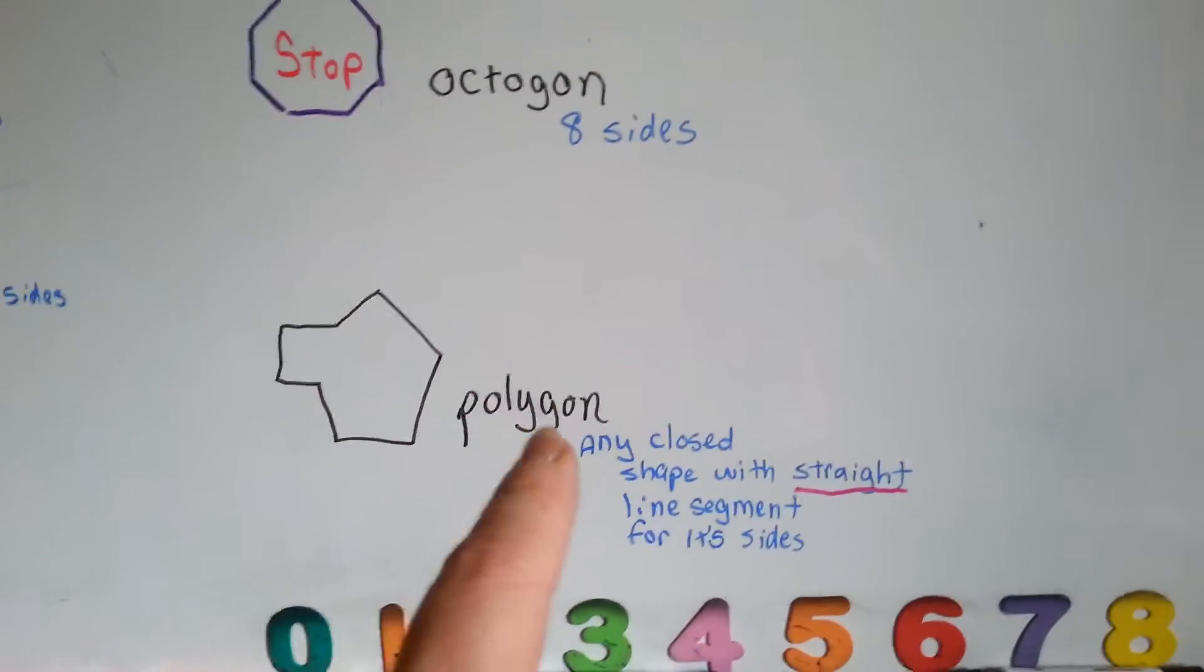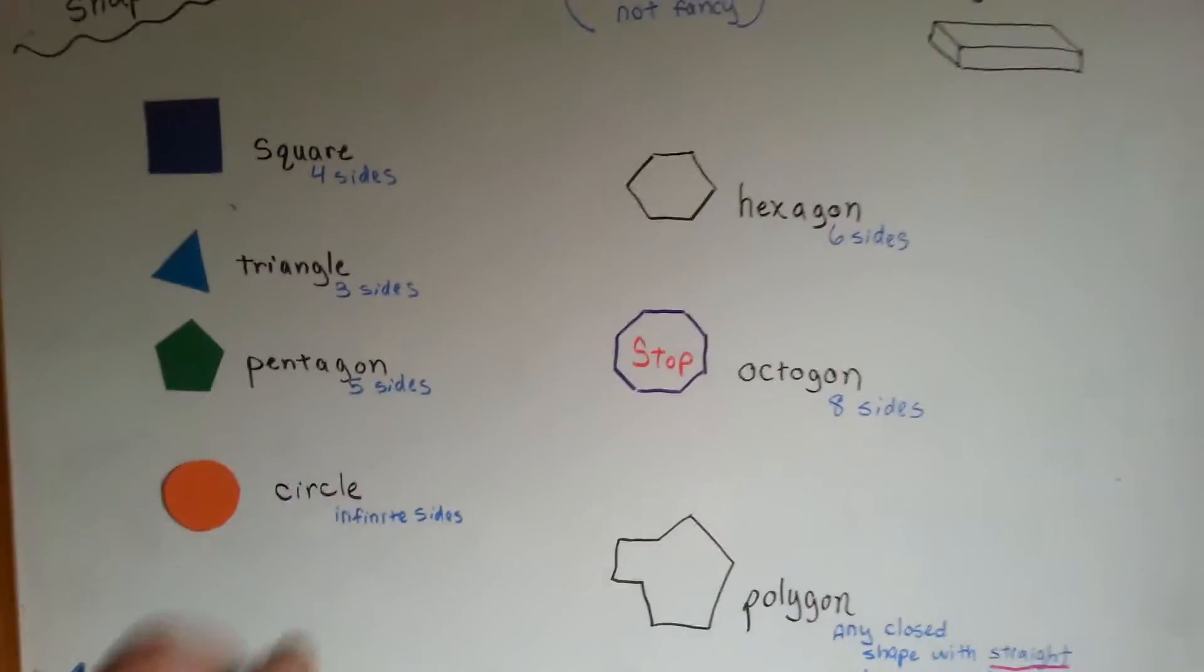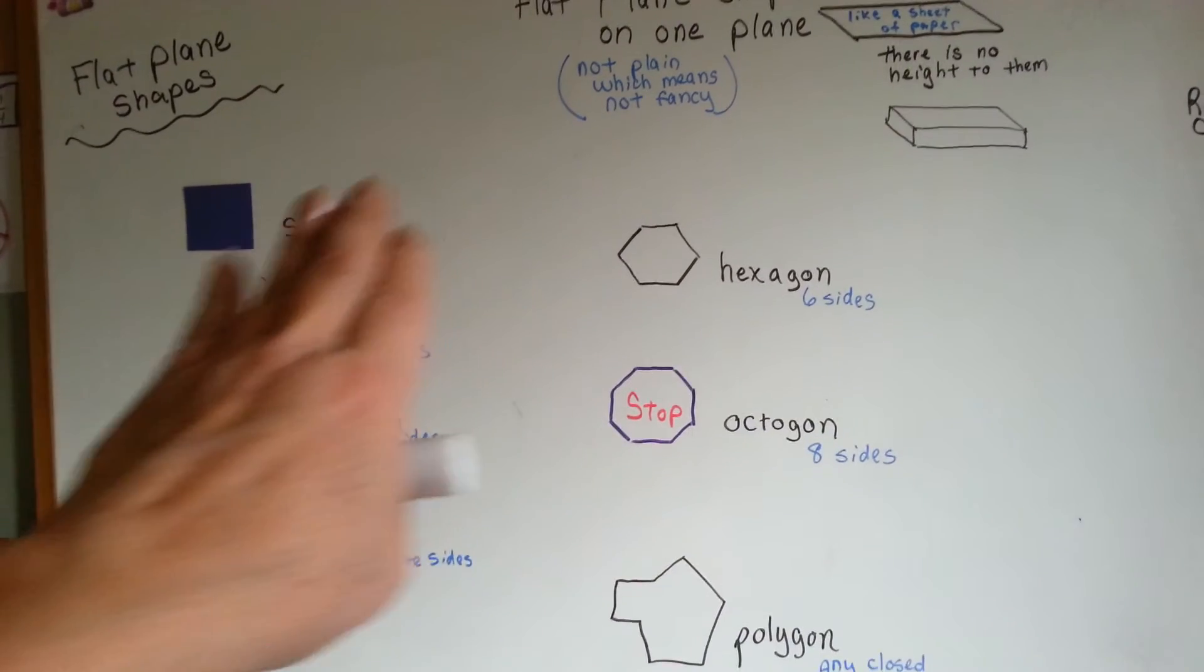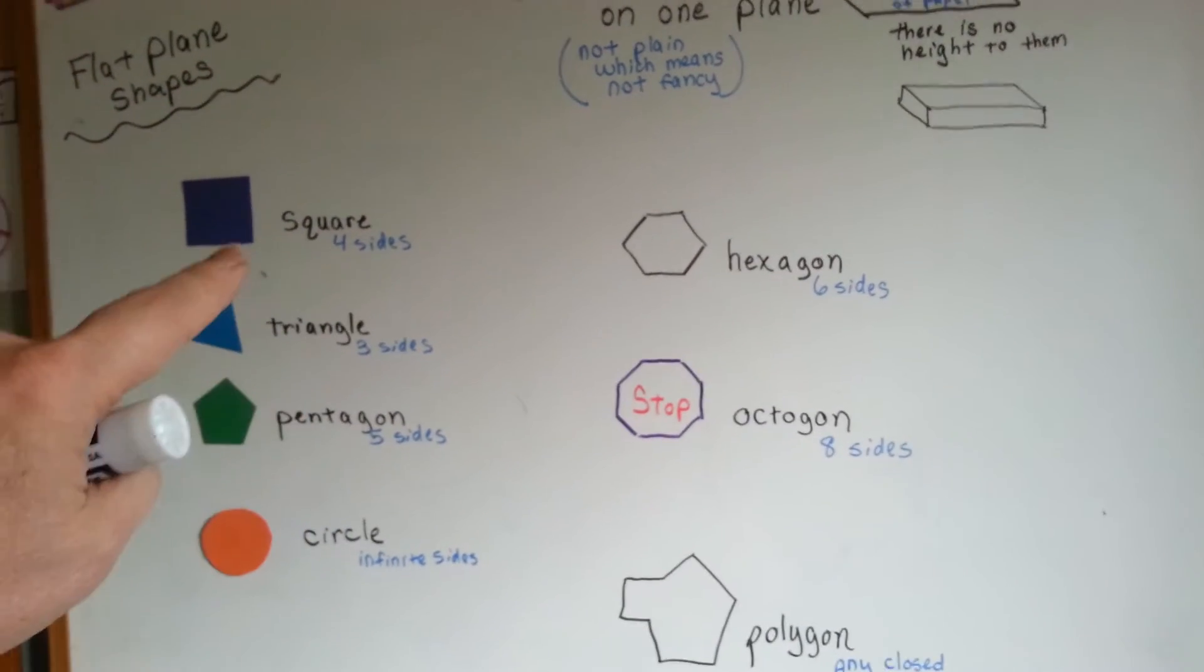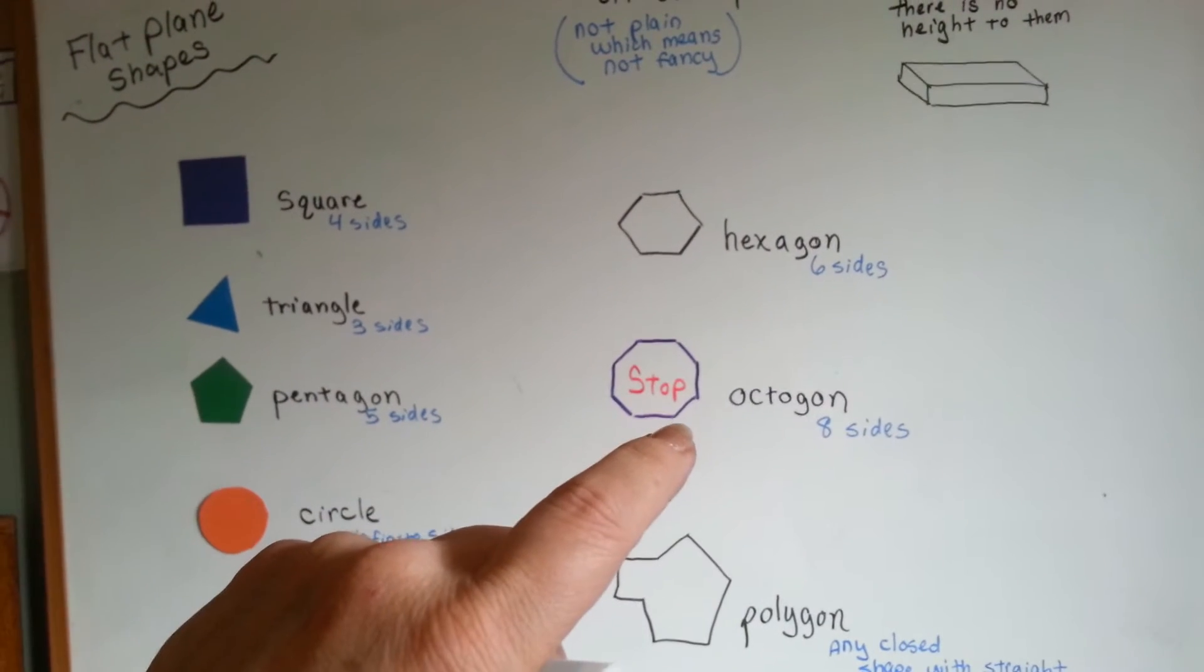Now, in our next video I'll discuss polygons with more depth, but right now I just want to discuss these basic shapes with you so that you can remember square, triangle, pentagon, hexagon, and octagon.